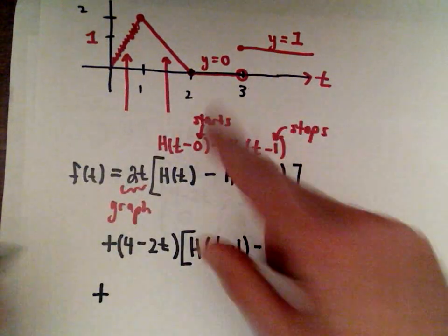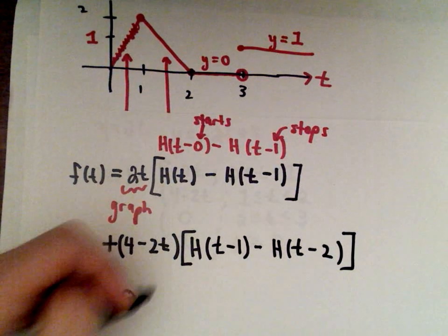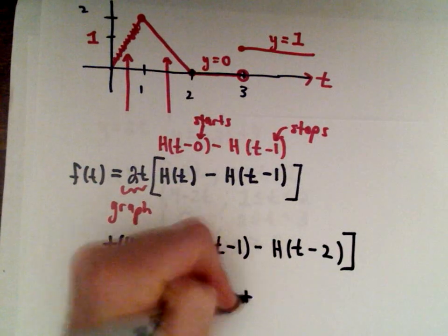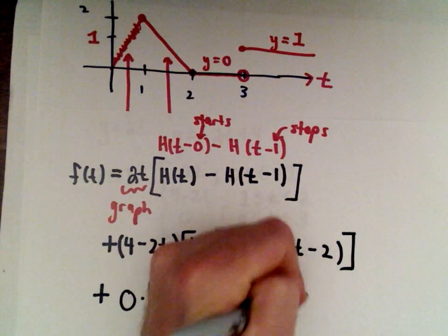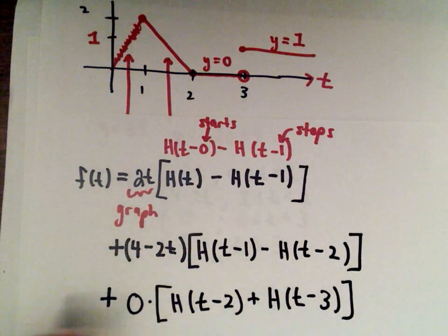And then you could write the third part. You know you really don't need that, right? The third part would just be 0. Just for completeness let's write it, so that would be h of t minus 2 plus h of t minus 3. Of course in the final formula you would just not even have that term in there.